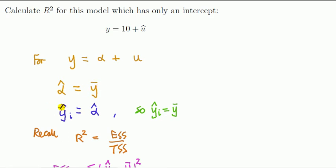Then, also, this follows: the predicted value of y for each point is going to be alpha hat, if this is the model. And so, that means taking these two together,